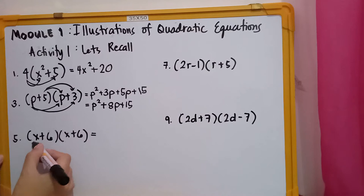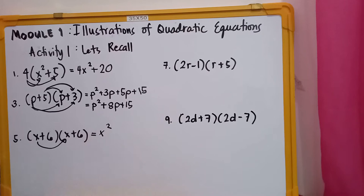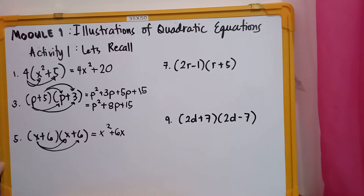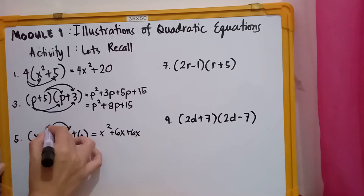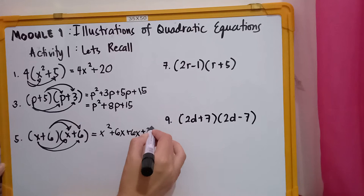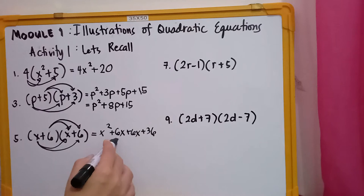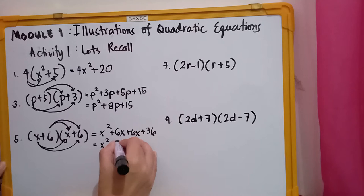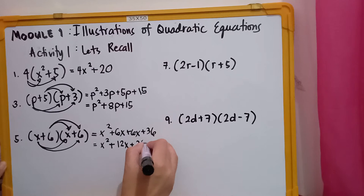The same process for number 5. We have x times x, that gives x squared. Then x times 6 gives positive 6x, and 6 times 6 is positive 36. Then, combining like terms, we have 6x and 6x, that gives 12x. The answer is now equal to x squared plus 12x plus 36.